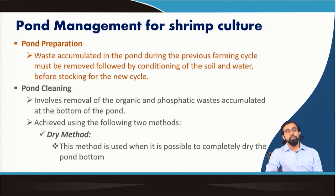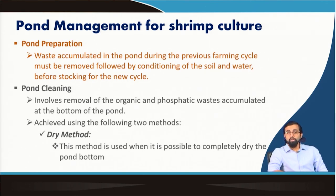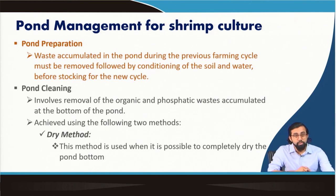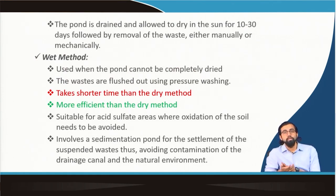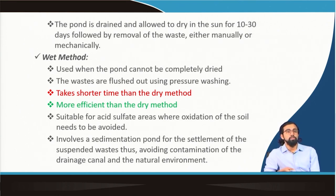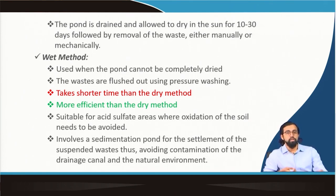For pond management, waste accumulated during the previous farming cycle must be removed, followed by conditioning of soil and water before stocking the new cycle. Pond cleaning involves removing organic and phosphatic waste from the bottom. The dry method involves completely drying the pond in sunlight for 10 to 30 days and manually or mechanically removing solid waste. The wet method is more favorable as it takes less time — pressure washing is used to flush out waste, and it is also suitable for acid sulphate areas. A sedimentation pond can be involved for settlement of suspended solids.